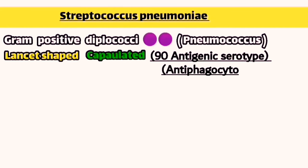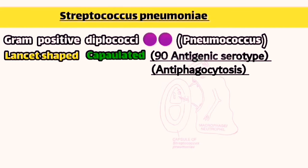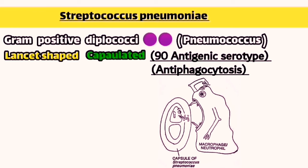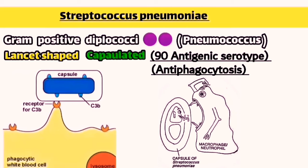The bacterial capsule also has an antiphagocytic function, which means that it can protect the bacterial cell from being engulfed by the white blood cells in the immune system, by covering all of the receptor sites from which the immune cells can recognize the bacteria.